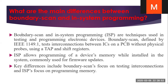What are the main differences between boundary scan and in-system programming? Boundary scan and in-system programming are techniques used in testing and programming of electronic devices. Boundary scan, defined by IEEE 1149.1, tests the interconnects between ICs and a PCB without physical probes, using a TAP controller and shift registers. In-system programming (ISP) allows programming of the device memory while it is installed in the system, and is commonly used for firmware updates. The key difference is that boundary scan focuses on testing interconnections, while ISP focuses on programming memory.